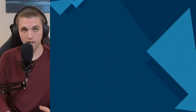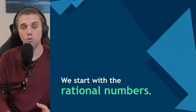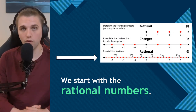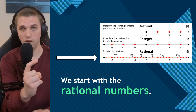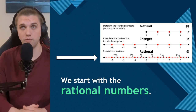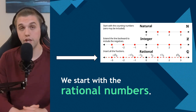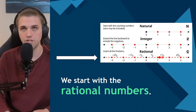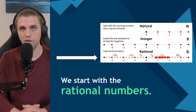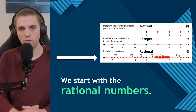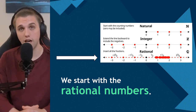So how do we construct the real line? First, we start with the rational numbers. The rational numbers don't cover all of the number line — there are infinitely many rational numbers, but apparently infinitely many rational numbers is not enough to completely fill this line so that it is continuous.